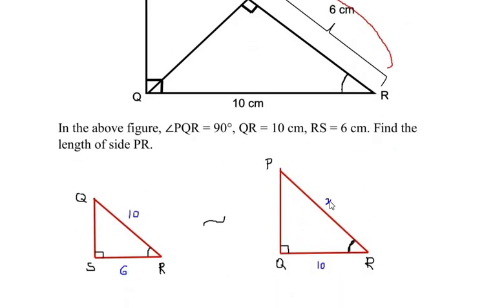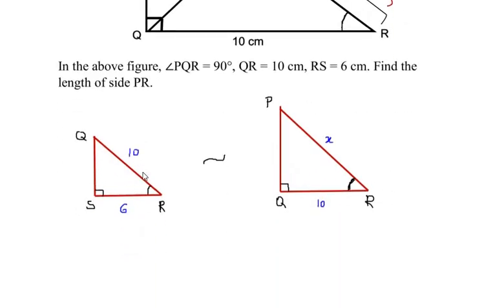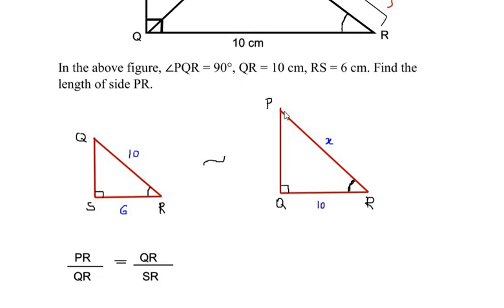Now since these are similar, we have the corresponding sides as proportional. So we can write here that x, that is PR over QR, so PR over QR is equal to QR over its corresponding side SR. Now let us substitute the values here: PR we have taken as x over QR is 10.